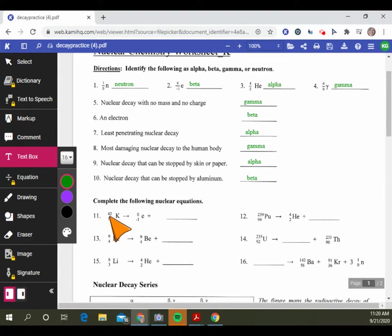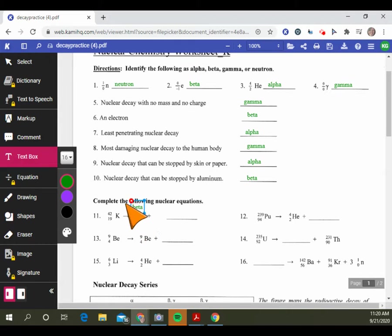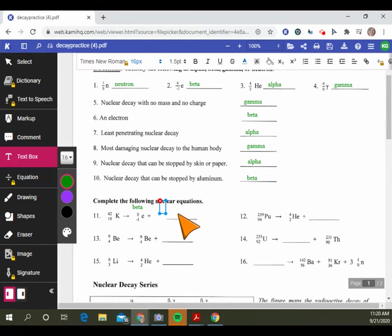If we look at number 11, complete the following nuclear equations. We have potassium-42 and this particle being emitted. This matches beta. I'm going to label it beta so I can identify and remember what our notes said. With beta decay, one of your neutrons becomes a proton, so your mass does not change.